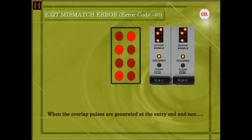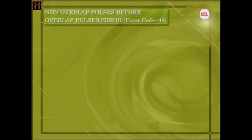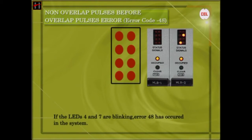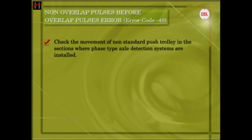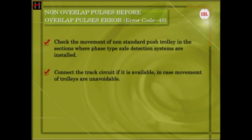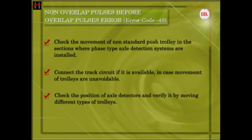This error is displayed when overlap pulses are generated at the entry end and non-overlap pulses are generated at the exit end, or vice versa. Non-Overlap Pulses Before Overlap Pulses Error: If LEDs 4 and 7 are blinking, then Error 48 has occurred. To rectify: 1. Check the movement of non-standard push trolley in sections where phase type axle detection systems are installed. 2. Connect the track circuit if it is available in case movements of trolleys are unavoidable. 3. Check the position of the axle detectors and verify by moving different types of trolleys.